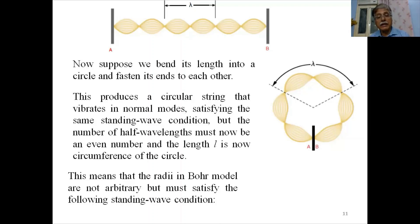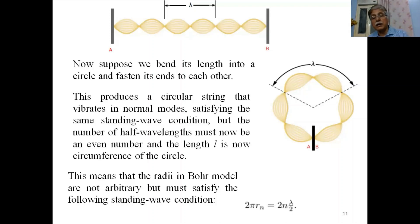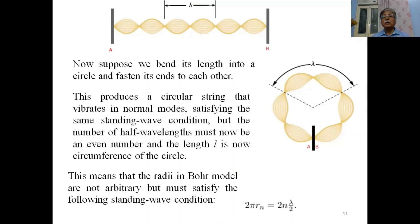This means the radii in Bohr's model are not arbitrary but must satisfy the standing wave condition: 2πrₙ = nλ, so only those radii are permitted for which an integral number of wavelengths fits onto the circumference of the circle. These waves are the de Broglie waves of the moving electron rotating in its orbit.